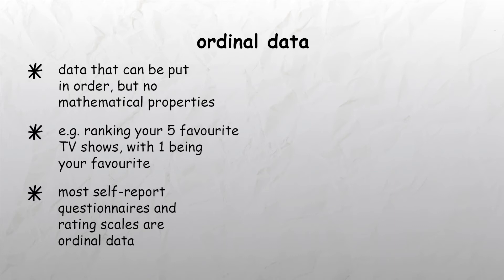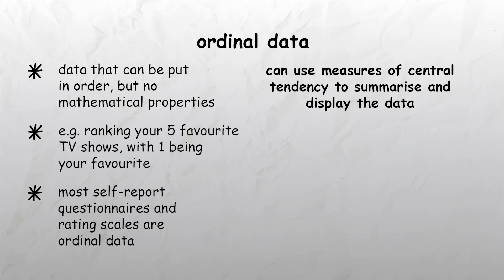For ordinal data you can use measures of central tendency in order to summarise and display the data. The three main types of central tendency include the mean, which is also known as the average. In order to calculate it, add up all the scores and divide by the number of scores.